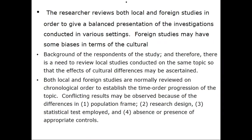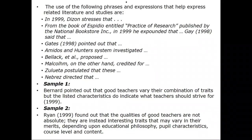Both local and foreign studies have their own importance and are normally reviewed in chronological order to establish the time-order progression of the topic. Conflicting results may be observed because of differences in population, research design, or presence of appropriate controls. Useful phrases and expressions to help write the literature and related studies can be drawn from sources such as Spodion (1999), published by the National Bookstore Inc.